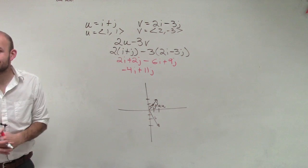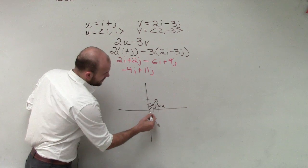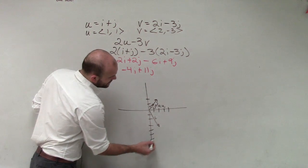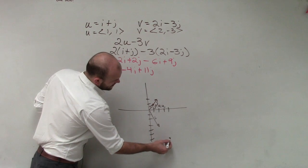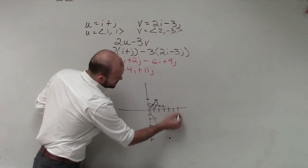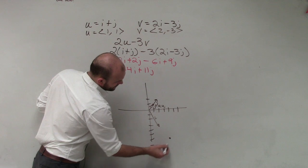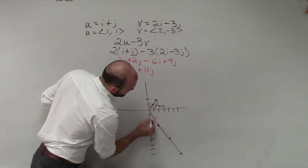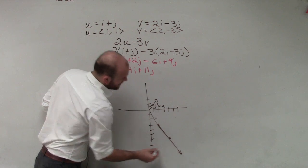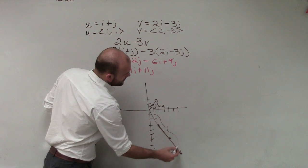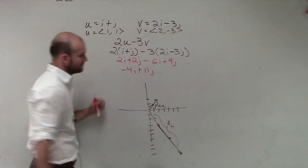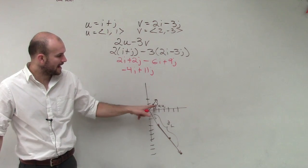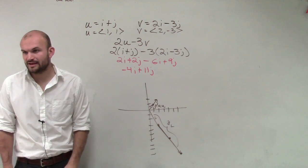And then v gets tripled. So we go over 2, down 3. So then we go over 2 again, down 3. Then we do it again. Over 2, down 3. So maybe not the best one, but you guys can see now we have 3v. So you guys see how by using my scalars, remember your scalars multiply through, now I have 2u and then 3v.